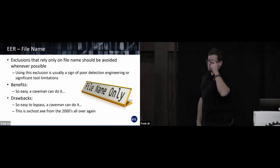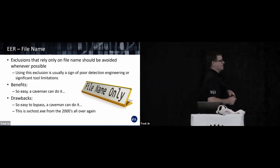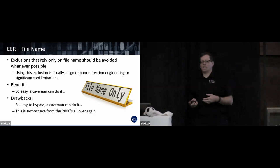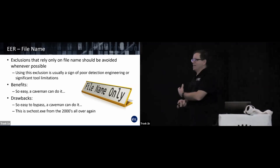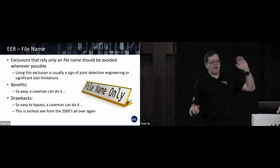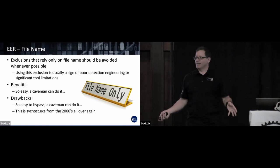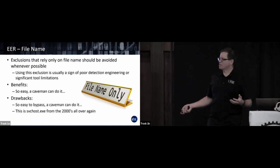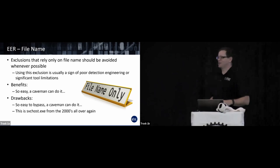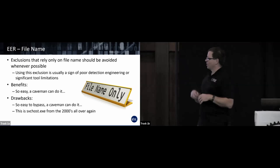Sixth is file name only — this is so easy to bypass a caveman can do it. It's reminiscent of the early 2000s when naming malware 'svchost' was an effective persistence trick because nobody wanted to terminate a service host process. We got smarter about that, and on Windows 10 there are now many svchost processes. Excluding by file name alone is not a good plan.